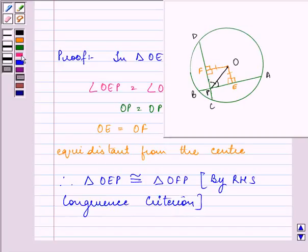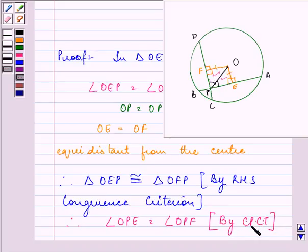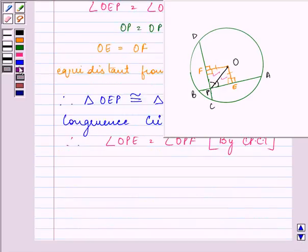So, therefore, I can say that angle OPE is equal to angle OPF because corresponding parts of the congruent triangles are equal. So, by CPCT. That is, corresponding part of congruent triangle. So, this is what I needed to prove.